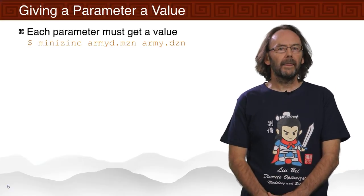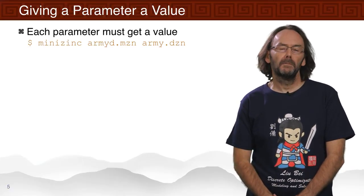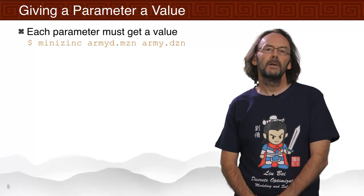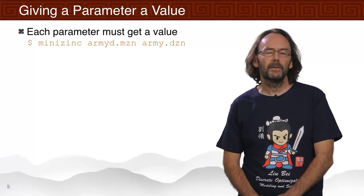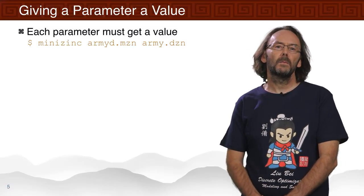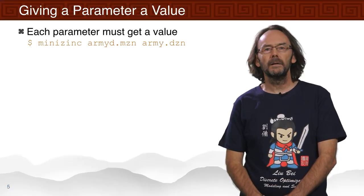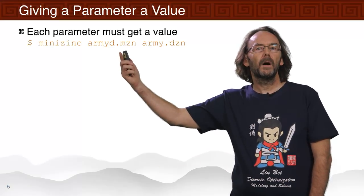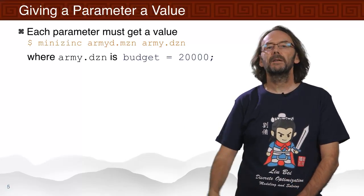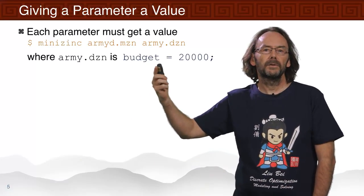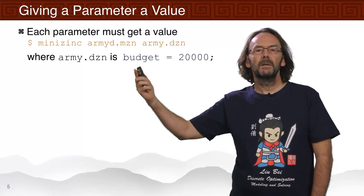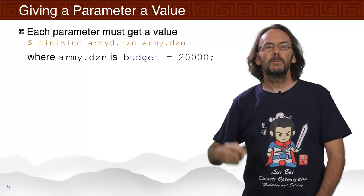When we run that model, we're going to have to give that parameter a value, because a parameter is not a decision — it must be given a value before the solver can know what problem it's solving. One way is to run with the model file and a data file, army.dzn. We'll assume this data file has the contents: budget equals 20,000, which is an assignment giving the missing value to budget.